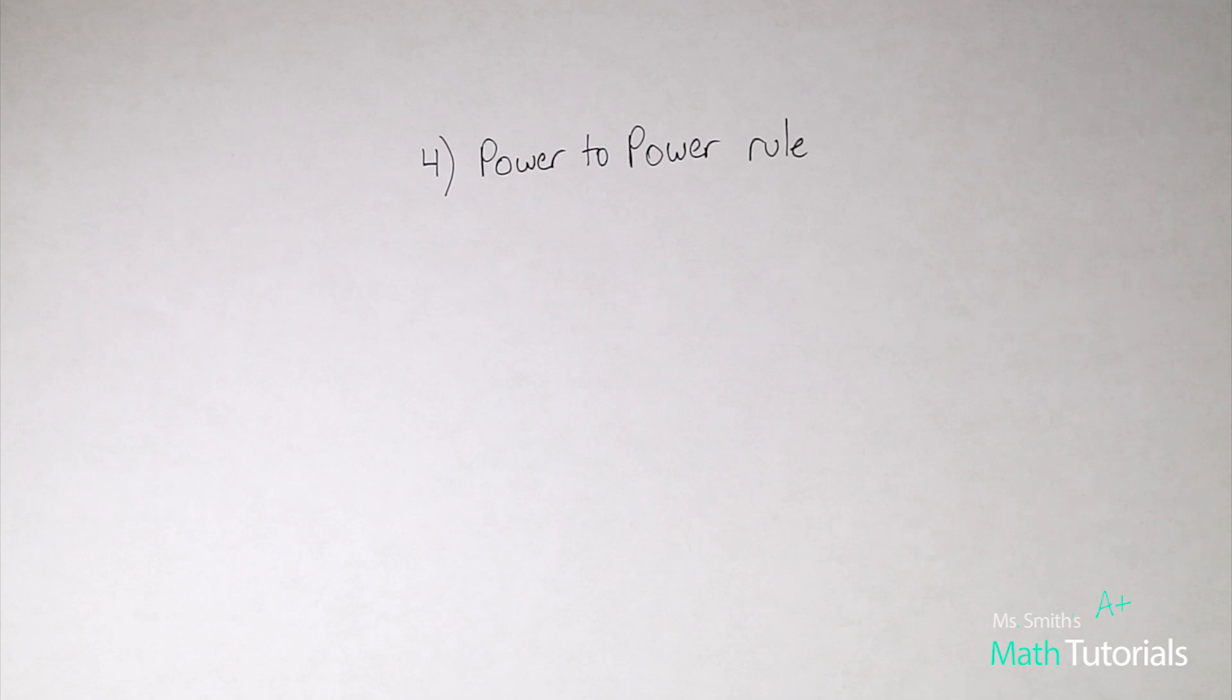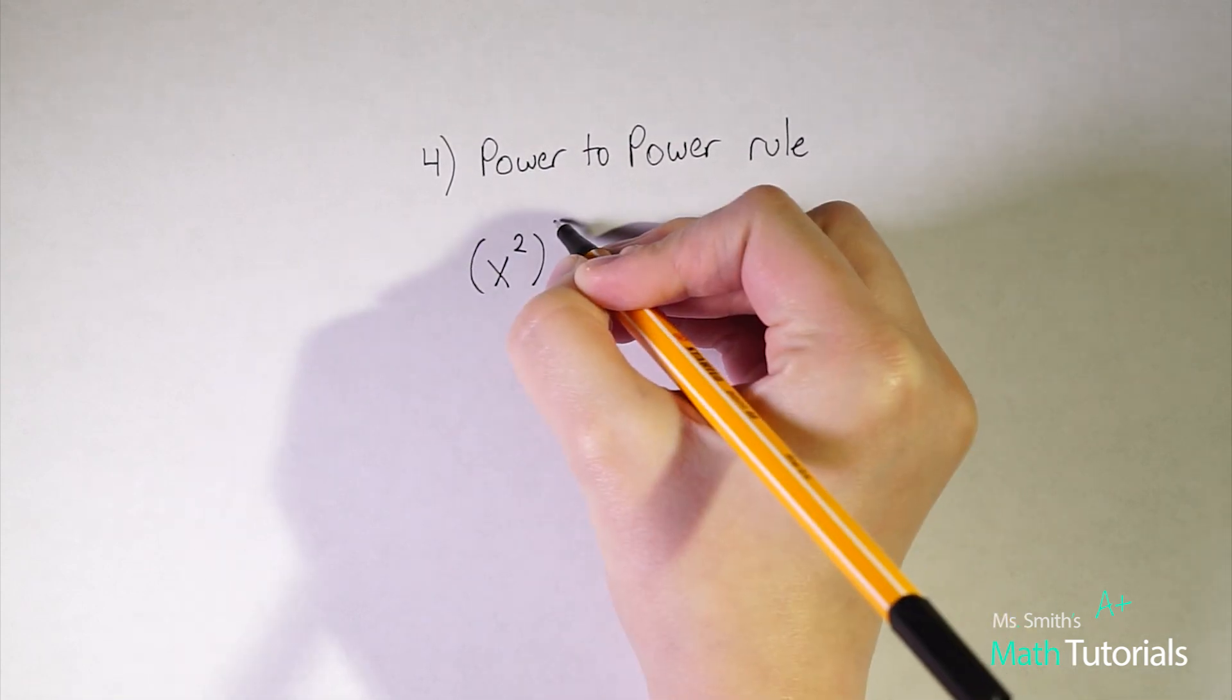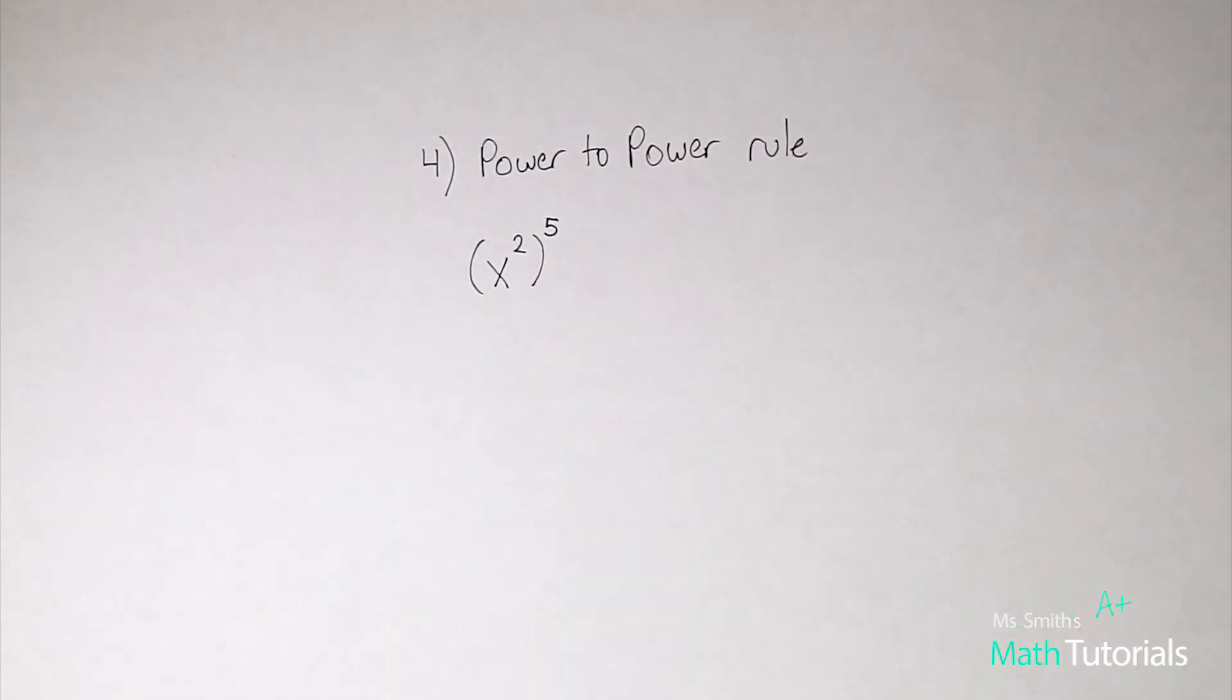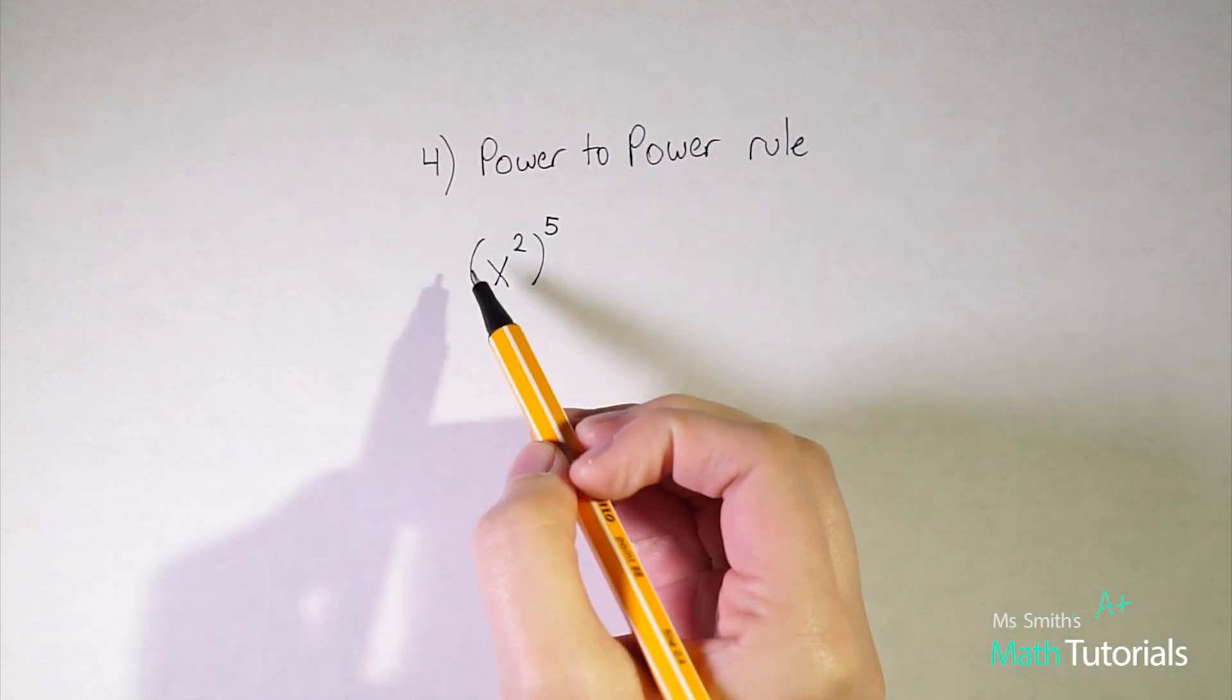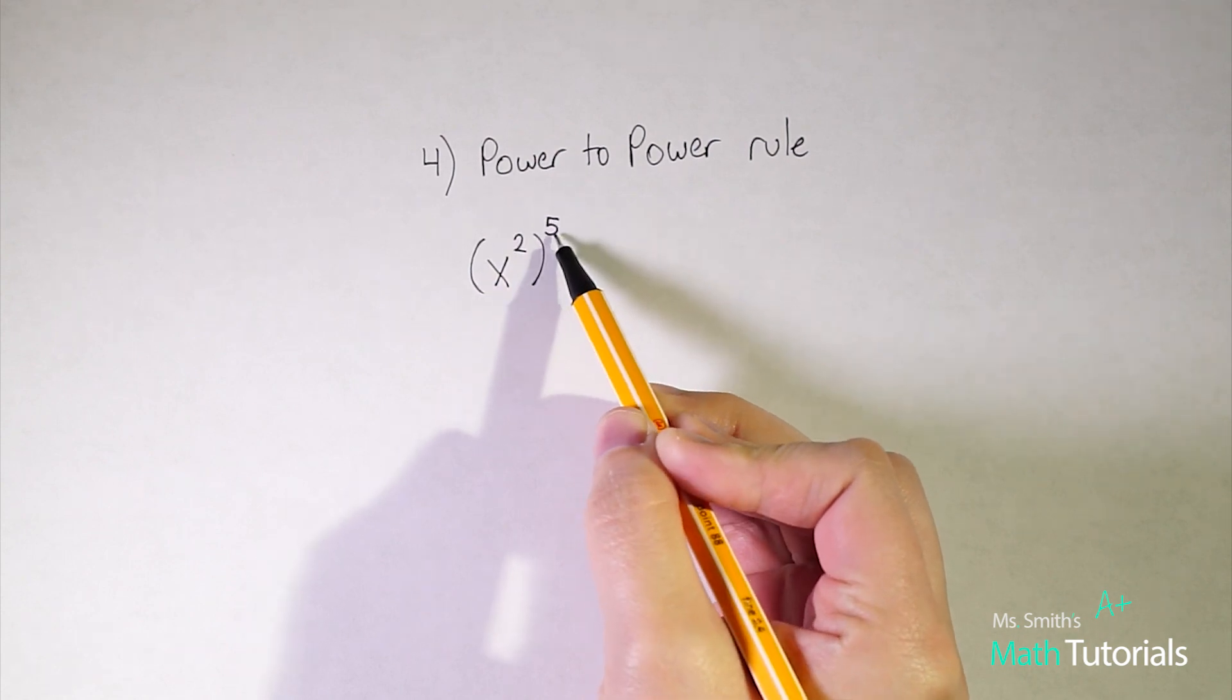So right from the get-go, right from day one we want to make sure that students are understanding the difference between product rule and power to power rule. These are two things that very frequently come up throughout the math one curriculum and so we want to make sure we have a pretty good handle on them from the get-go. So with the power to power rule we could be given a problem like x squared and then brought to the power of five. So you'll notice this one is different from the product rule. We're not straight multiplying across, we've got a power that's been brought to another power.